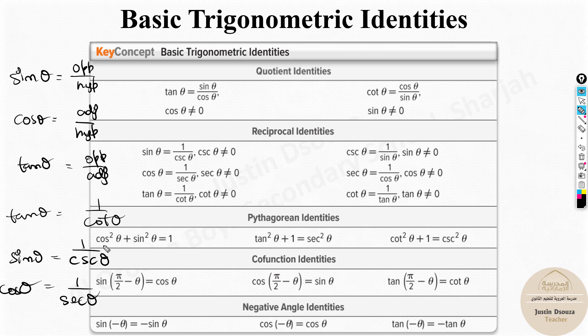Whenever we have a reciprocal, the denominator cannot be zero. So for sec θ = 1 / cos θ, cos θ cannot be zero. And for csc θ = 1 / sin θ, sin θ cannot be zero.